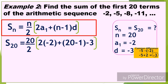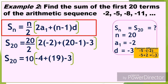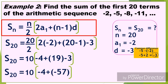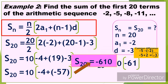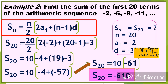Substituting the values: S of 20 equals 20 divided by 2 times 2 times negative 2 plus 20 minus 1 times negative 3. Simplifying: 20 divided by 2 is 10; 2 times negative 2 is negative 4; 20 minus 1 is 19; 19 times negative 3 is negative 57. So S of 20 equals 10 times negative 4 plus negative 57, which is 10 times negative 61. Therefore, S of 20 equals negative 610.